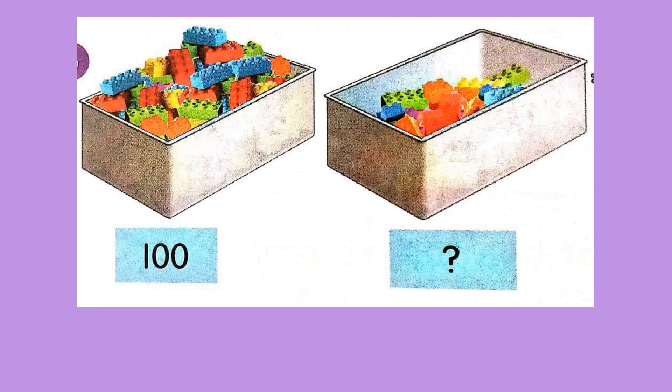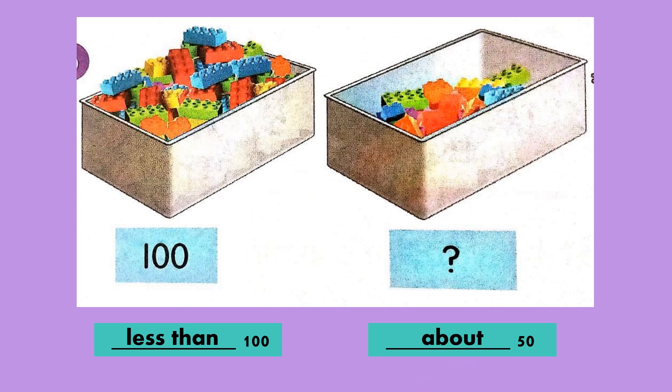Next, look at this Lego blocks — tengok blocks ni. The first one is full — penuh bekas ni — 100. And the second one is about half — lebih kurang separuh daripada bekas. The second one compared to the first one, is it more than or less than? Dia lebih sikit, lebih sikit — jadi kita guna less than 100. Ataupun separuh daripada 100 is 50. Kita nak cakap apa sekarang? Kalau 50, kita guna perkataan about 50.